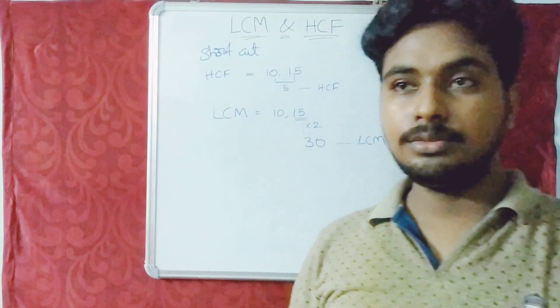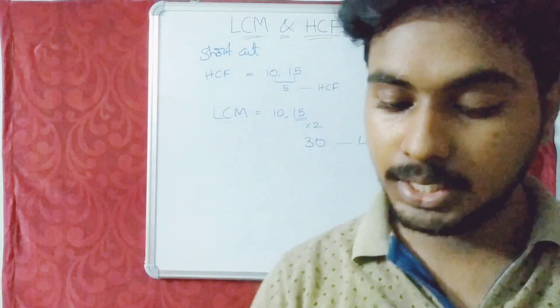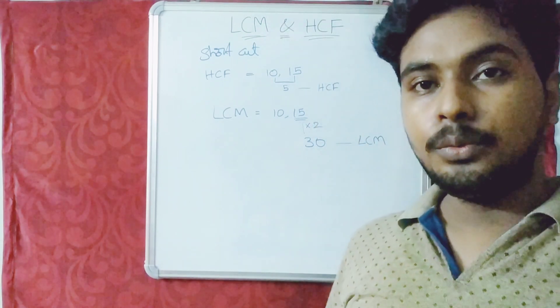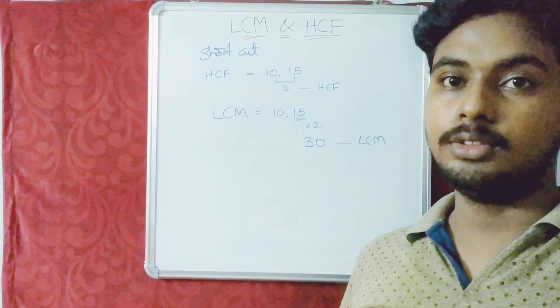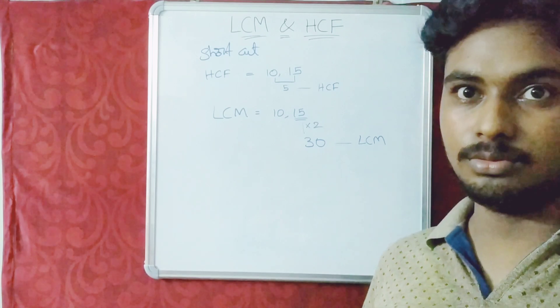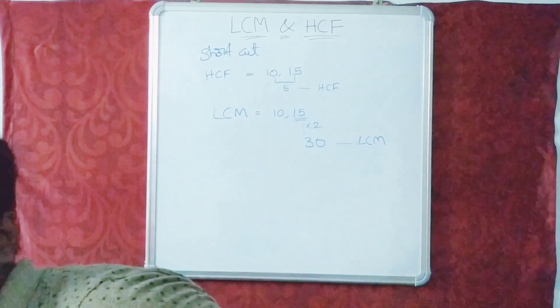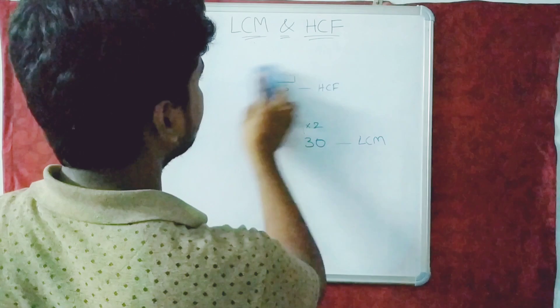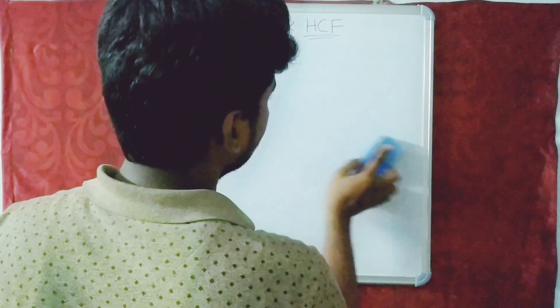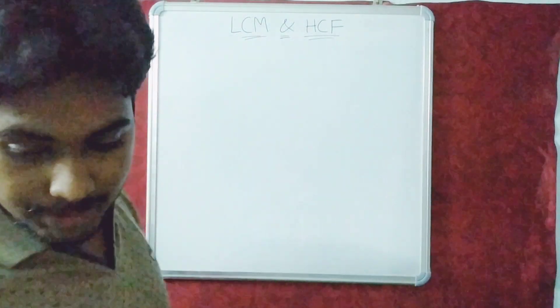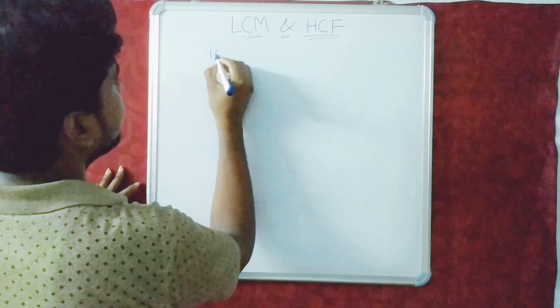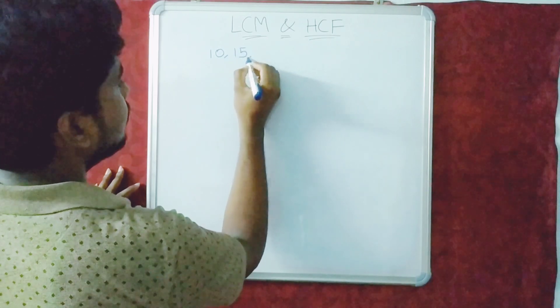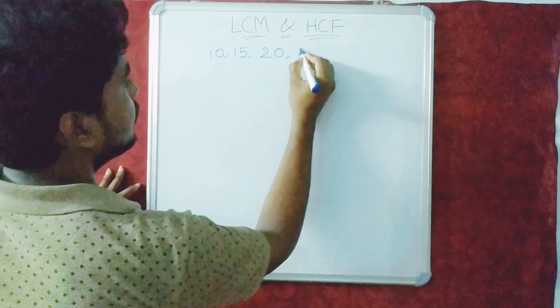The general method is okay for two numbers, but it will be difficult for more than two numbers — that means 3, 4, or 5 numbers. Instead of two numbers, let's take more numbers: 10, 15, 20, 30.